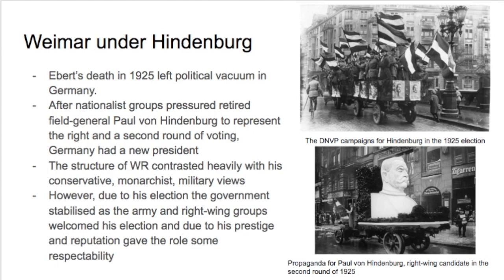We know that the SPD leader Ebert became the Chancellor of the Weimar Republic, and in 1925 he died, leaving a political vacuum with no one left to take control. We then have Paul von Hindenburg — an ex-retired field general from the German army — wanted as Germany's new president. He was very right-leaning, focused on conservatism, perhaps rebuilding the Kaiser, and fairly hawkish military views. In response to his election, the army and right-wing groups welcomed it, and due to his prestige, people knew his face, giving the Weimar Republic some respectability.